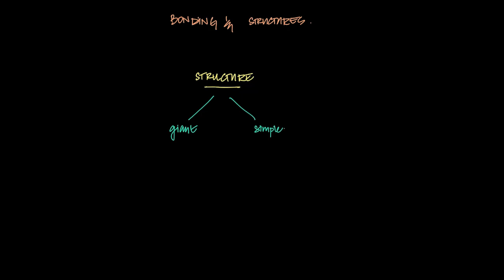Giant structures are actually of three types — all three from your previous education, IGCSE and O levels. A giant can be either ionic — that's a giant ionic lattice — or you can have metallic structures, which are also giant. And you can have covalent giant structures, which are called macromolecular. These are basically giant covalent structures.